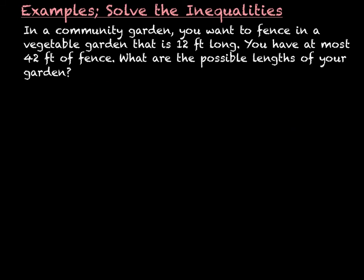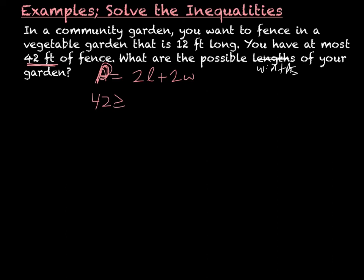The final example: in a community garden, you want to fence in a vegetable garden that is twelve feet long. You have at most forty-two feet of fence. What are the possible widths of your garden? The perimeter around the garden is equal to two L plus two W. Forty-two is greater than or equal to the perimeter because you can't use more than forty-two feet. So forty-two is greater than or equal to two times twelve plus two W.